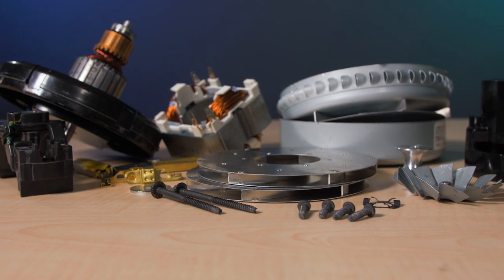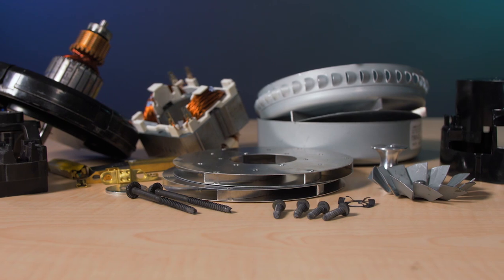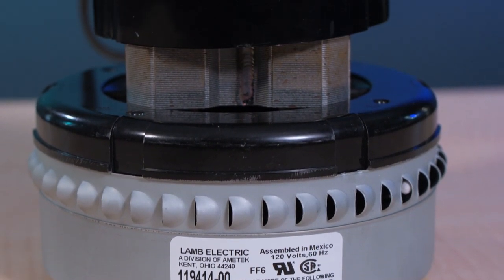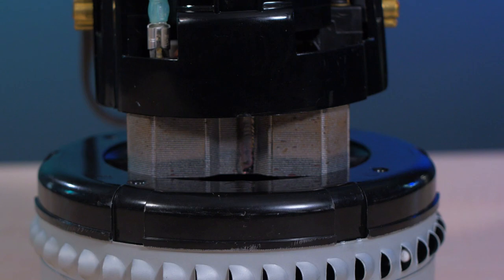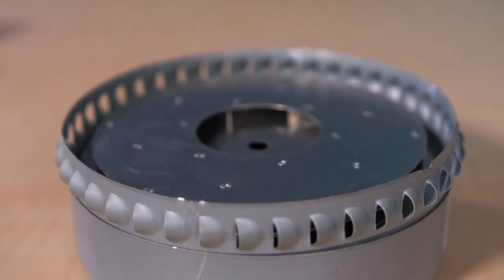But first, we'll reveal the blower details. Lam calls this a 5.7-inch diameter vacuum motor. The 5.7 inches refers to the diameter of the vacuum housing. The inlet to the housing is in the center and the exhaust is via outlets around the edge.